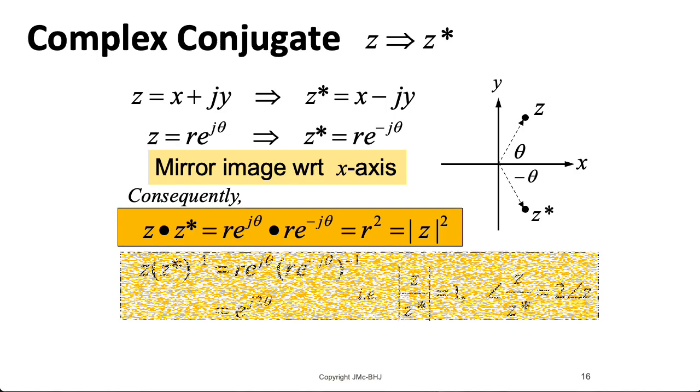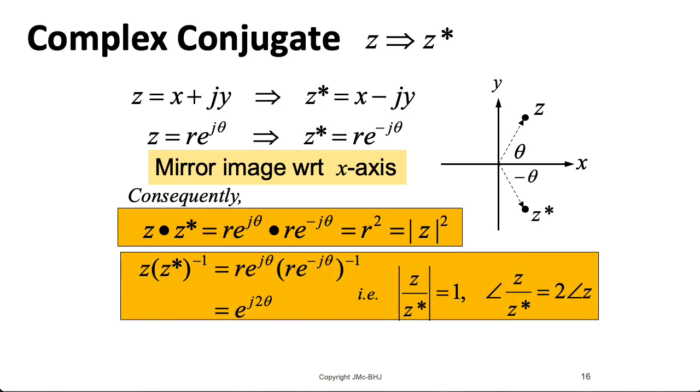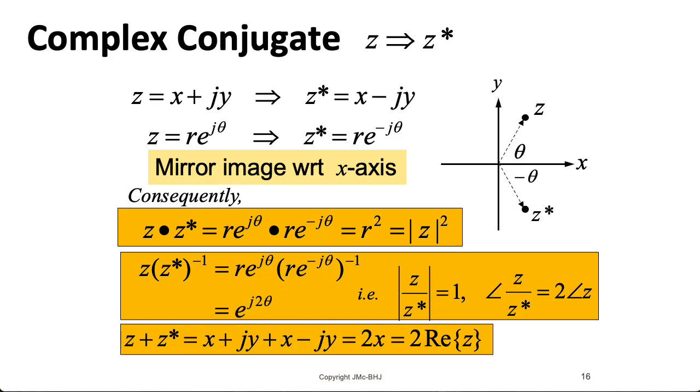Now, if you take a complex number and divide it by its complex conjugate, you get a complex number with a magnitude of 1, and you double the angle. Notice that if we take a complex number and add its complex conjugate, the imaginary parts wind up canceling, and you just get twice the real part. So think for a second, what happens if you subtract the complex conjugate of a number from itself? A few seconds of thought will tell you that gives you twice the imaginary part. We'll use these properties quite a bit in future lectures.